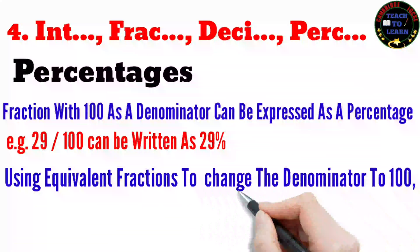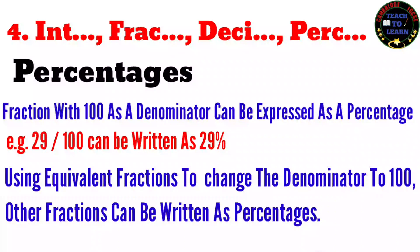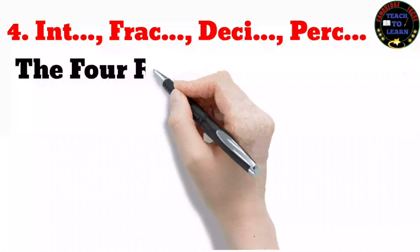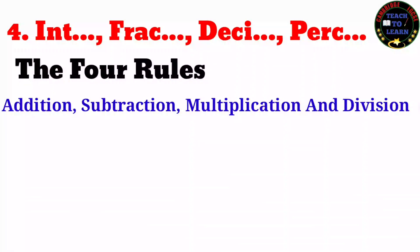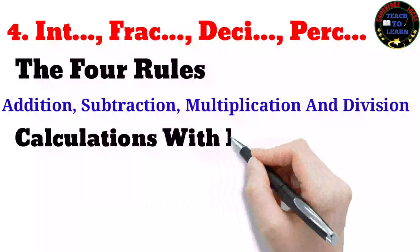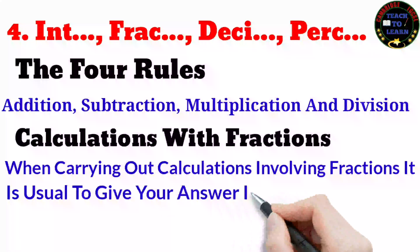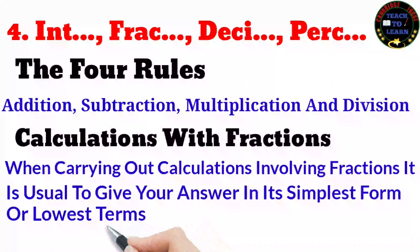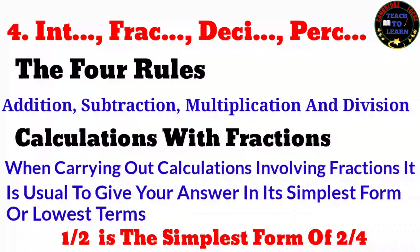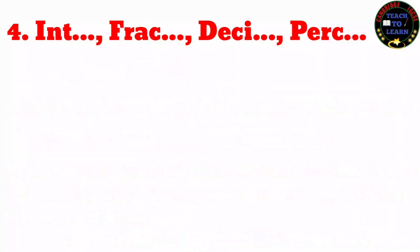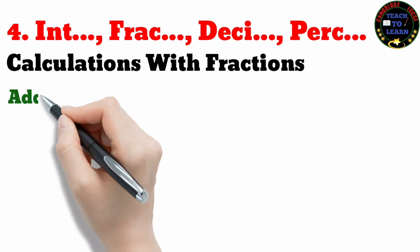A fraction with 100 as its denominator can be expressed as a percentage. For example, 29/100 can be written as 29%. Using equivalent fractions to change the denominator to 100, other fractions can also be written as percentages. The four rules are addition, subtraction, multiplication, and division. When carrying out calculations involving fractions, it is usual to give the answer in its simplest form — for example, 1/2 is the simplest form of 2/4.